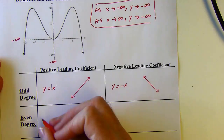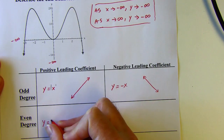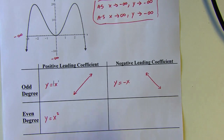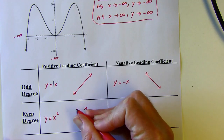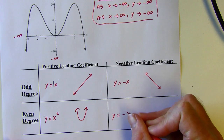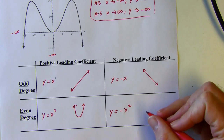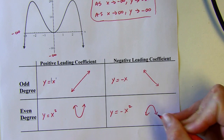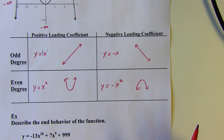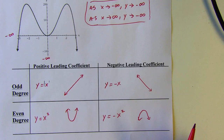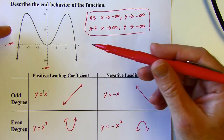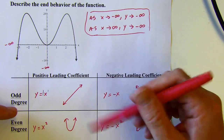For a positive leading coefficient and an even degree, the simplest example is y equals x squared — the parent graph for a parabola. For a negative leading coefficient with an even degree, that's a parabola that opens down from the origin. Now I've got a map: you can describe the end behavior of any function if you know its leading coefficient sign and whether the degree is odd or even, even without graphing it.